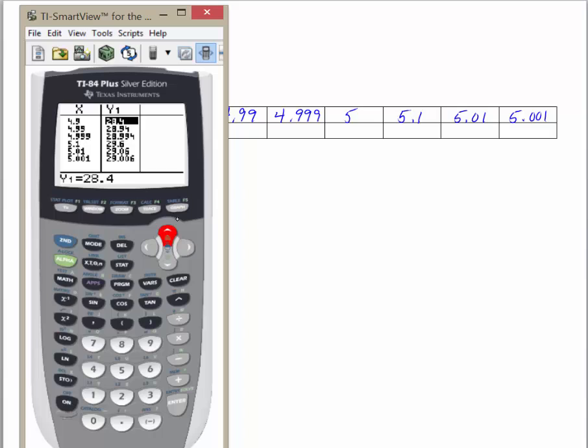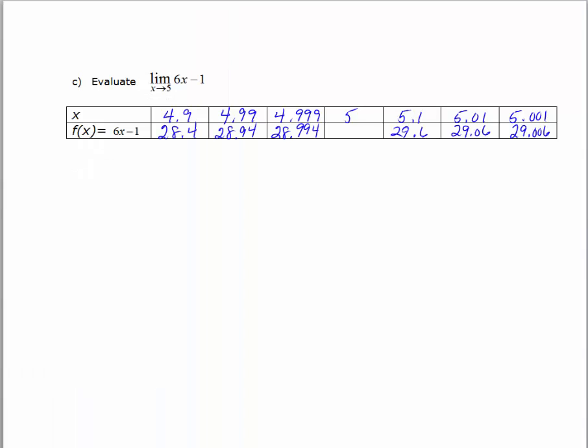And the same thing, I'll highlight each value and put those values in my table. So we've got our values in here, and it appears to me, as I approach 5 from the left, that the y values are approaching 29. And as I approach from the right, the y values are also approaching 29. Now what's different about this limit is that we can actually evaluate the function at 5, and f of 5 is 29. But just using the idea of a limit, the limit as x approaches 5 of 6x minus 1 is equal to 29. We also happen to know that f of 5 equals 29. And we talked earlier about the fact that the limit doesn't necessarily have to equal the function value, but in this case, it does.